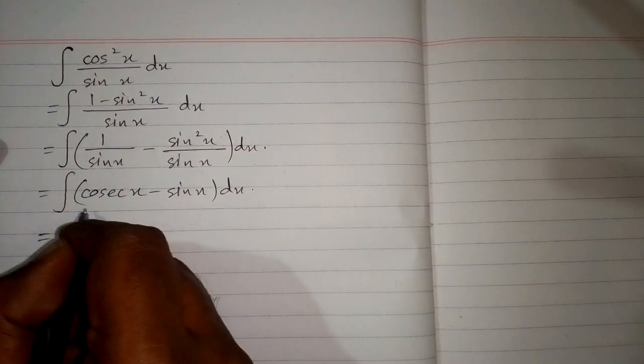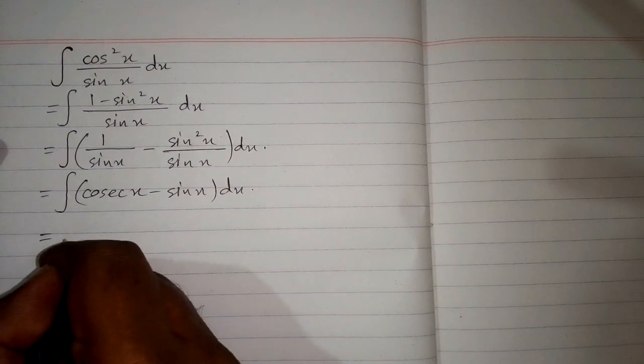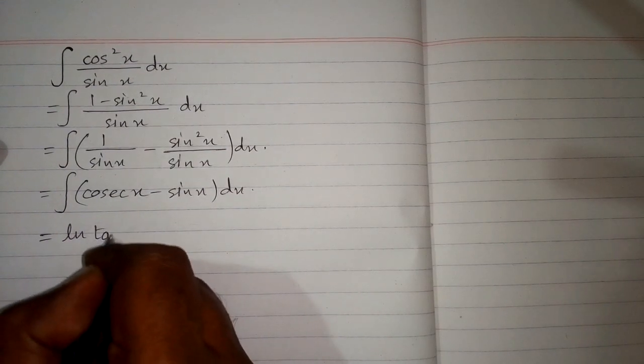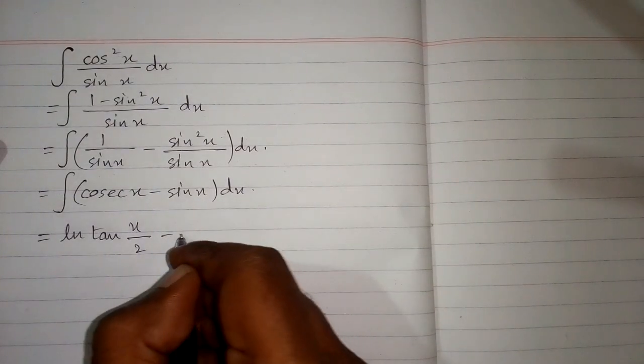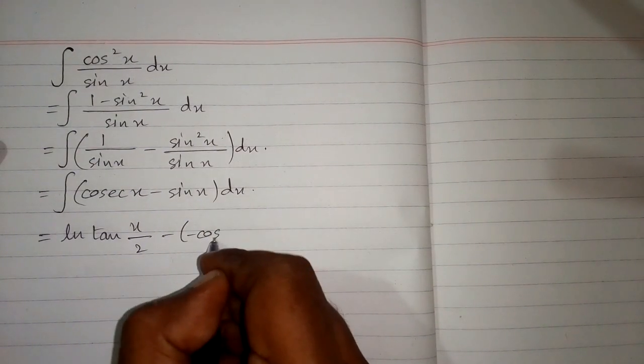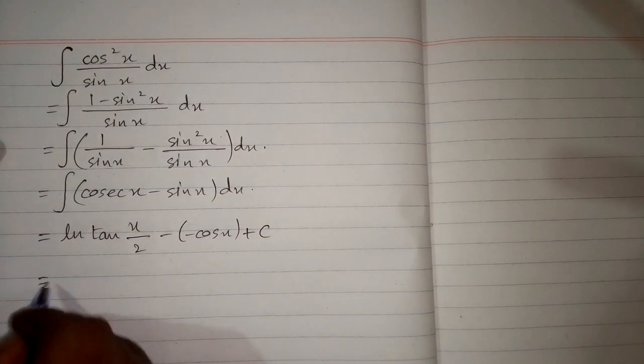Now we will take the integral of both the terms. So integral of cosec x is ln of tangent x upon 2 minus integral of sin x is minus cosine x plus c where c is the constant of integration.